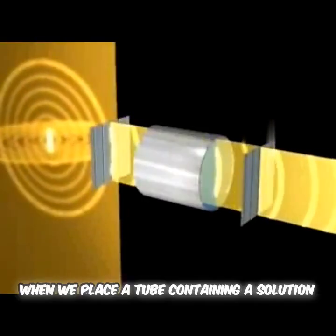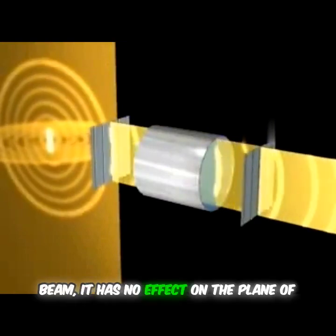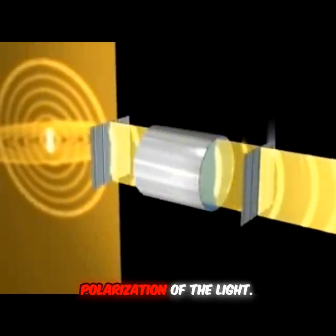When we place a tube containing a solution of nonchiral compound in the path of the beam, it has no effect on the plane of polarization of the light.